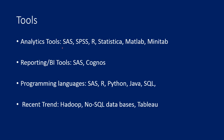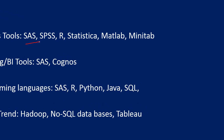Led by SAS — so SAS is the market leader. And then SPSS; now IBM has acquired SPSS. And then R, which is the free software and becoming very, very popular nowadays. And then Statistica — now it's with Oracle. And then MATLAB, Minitab. So these are some of the very popular statistical tools used in analytics.